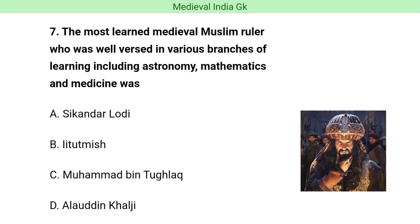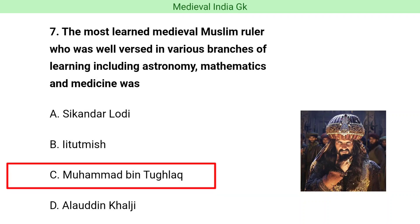Question number seven. The most learned medieval Muslim ruler who was well versed in various branches of learning including astronomy, mathematics, and medicine was which ruler? The correct answer is option C, i.e. Muhammad bin Tughlaq.